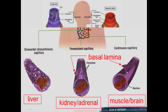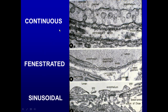A continuous capillary does not have holes in the wall. In the kidney and adrenal you have fenestrated capillaries, which have little holes in the wall. Both of these have a distinct basal lamina around the endothelial cells. In contrast, the sinusoidal or discontinuous capillary has gaping holes, and fluid can bathe the parenchymal cells located on the outside. In this case the basal lamina is either missing or incomplete.